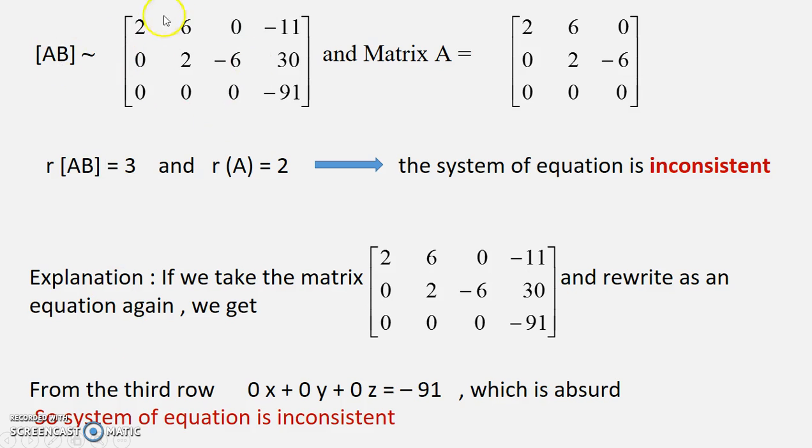Now this gives you rank of A and rank of AB. See here how many non-zero rows are there? 3. And here how many non-zero rows? 2. So this and this are not same. So the system is inconsistent here.